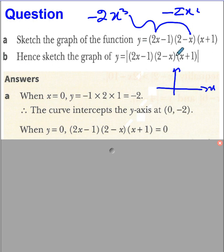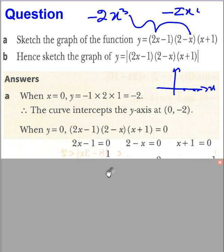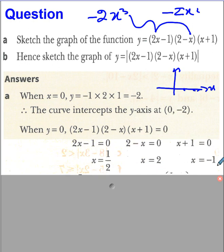Now for x-intercept you put y = 0 because any point on the x-axis will have y-coordinate 0. So if you put y = 0 then these three factors will give you values of x as ½, 2 and -1.